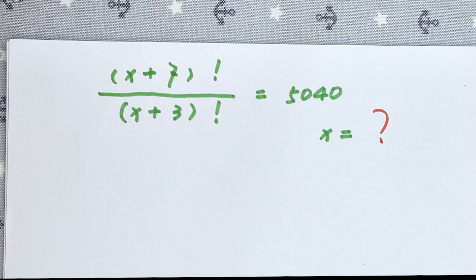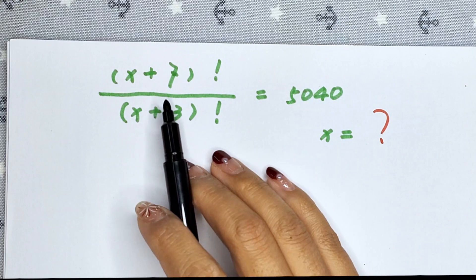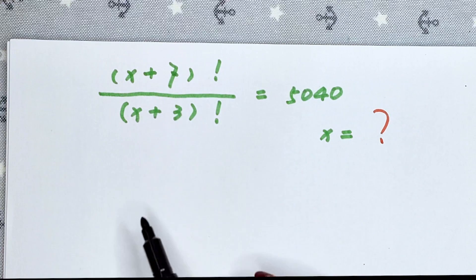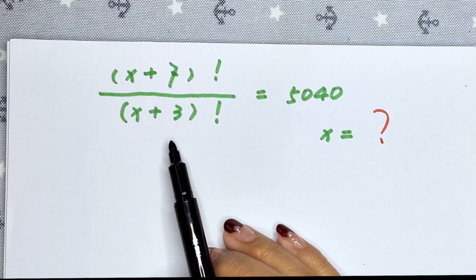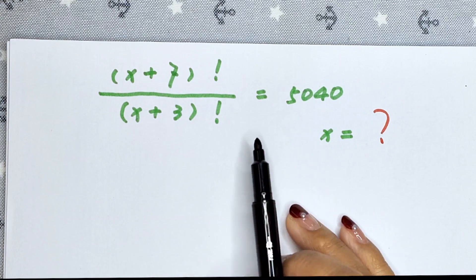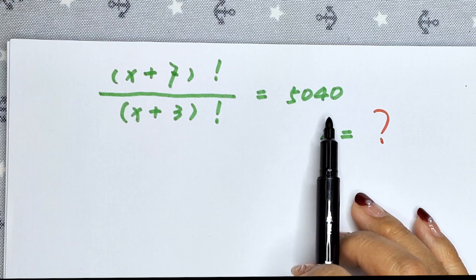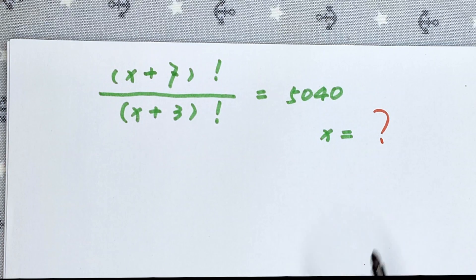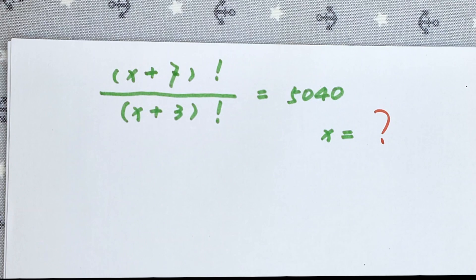Hello everyone, welcome to Math4U. How to solve (x plus 7) factorial over (x plus 3) factorial equals 5,040, and find the value of x.